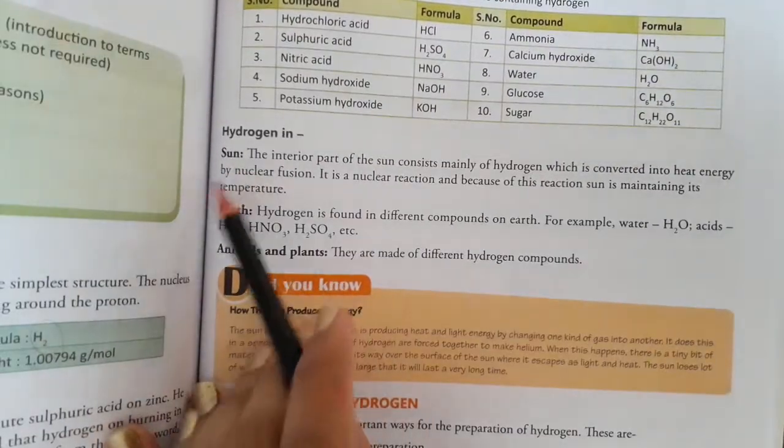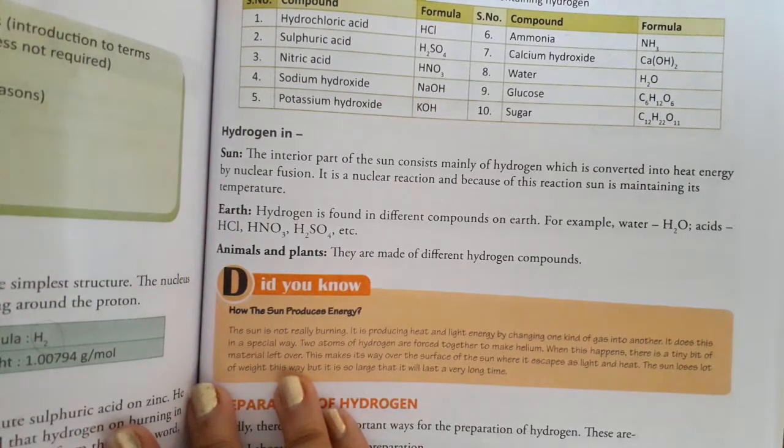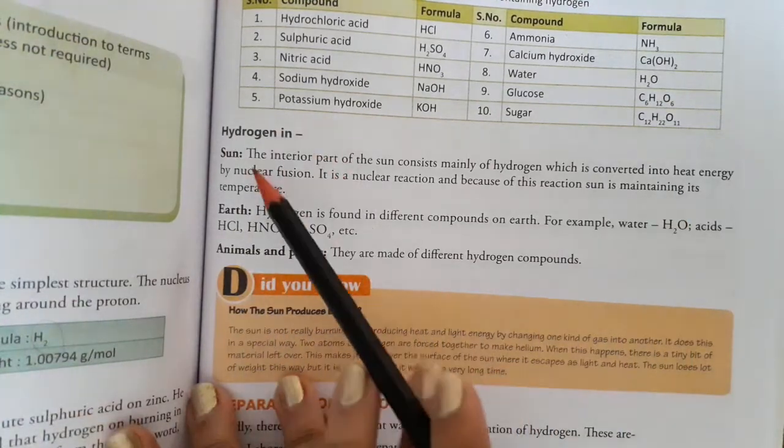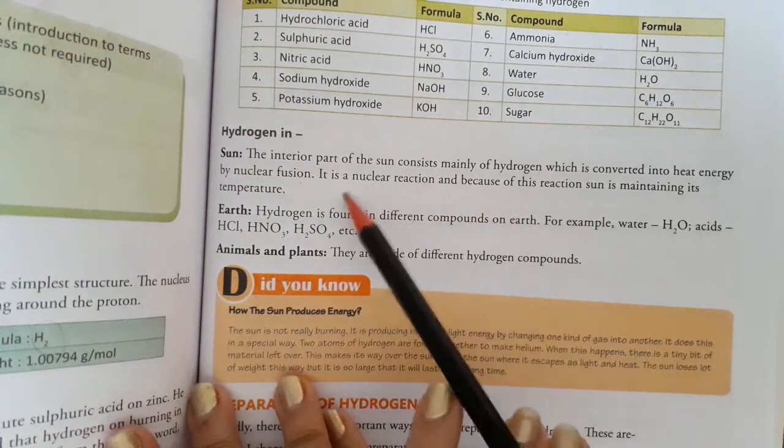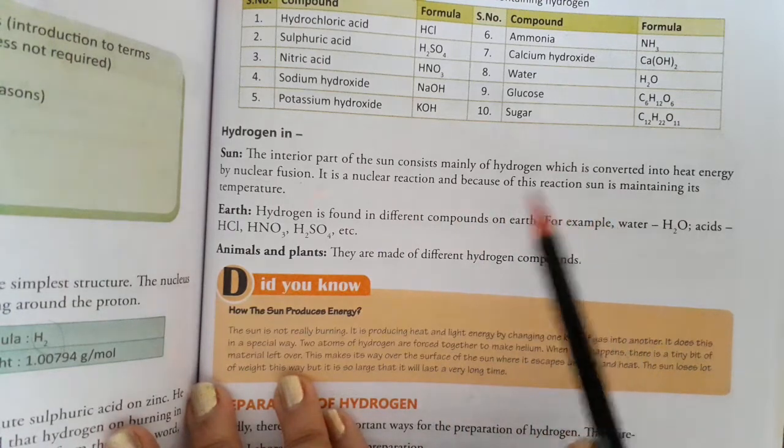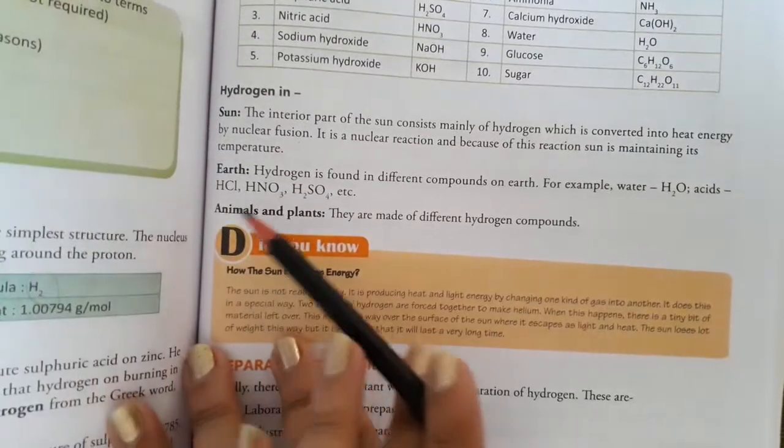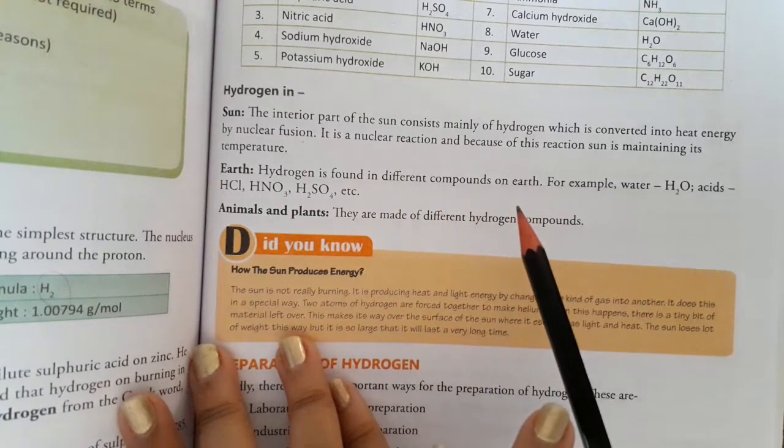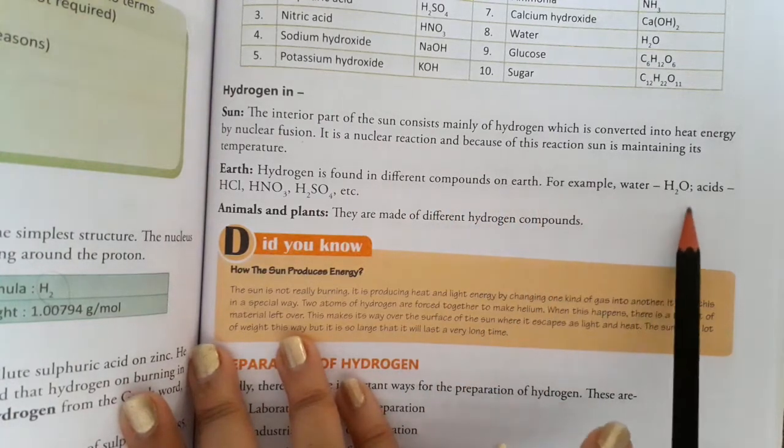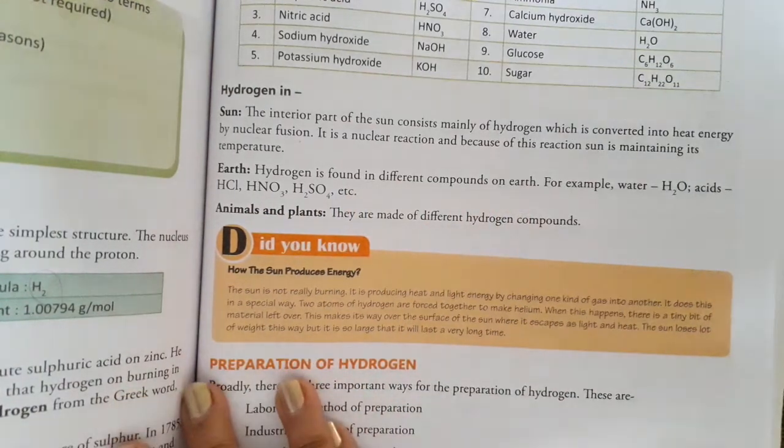Hydrogen in sun: The sun's interior basically consists of hydrogen. This hydrogen converts to heat energy through nuclear fusion method. It is a nuclear reaction and because of this reaction sun is maintaining its temperature. On Earth, hydrogen is found in different compounds like water H2O, acids HCl, HNO3, H2SO4, and in animals and plants which are made up of different hydrogen compounds.